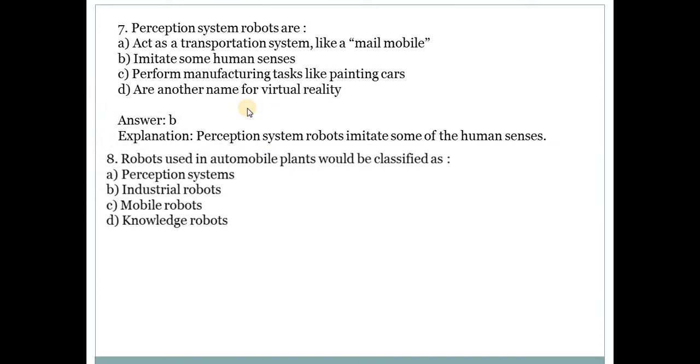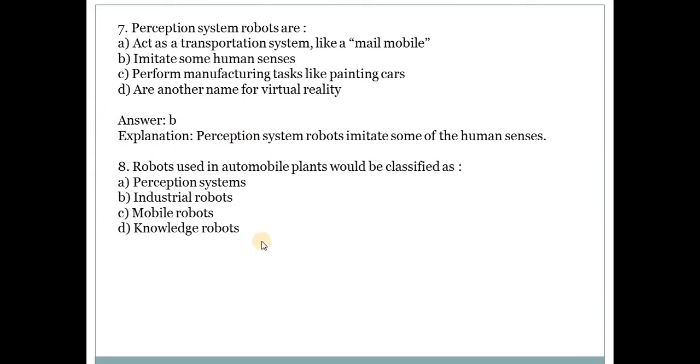Eighth question: Robots used in automobile plants would be classified as answer B. Industrial robots are used in automobile plants. Robots are also classified into different categories: perception systems, industrial robots, mobile robots and knowledge robots.